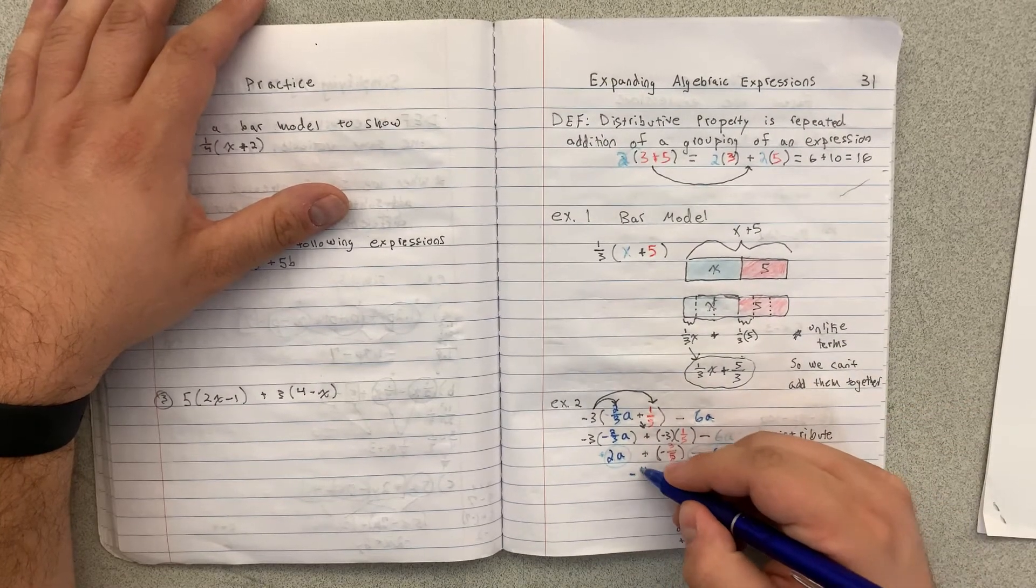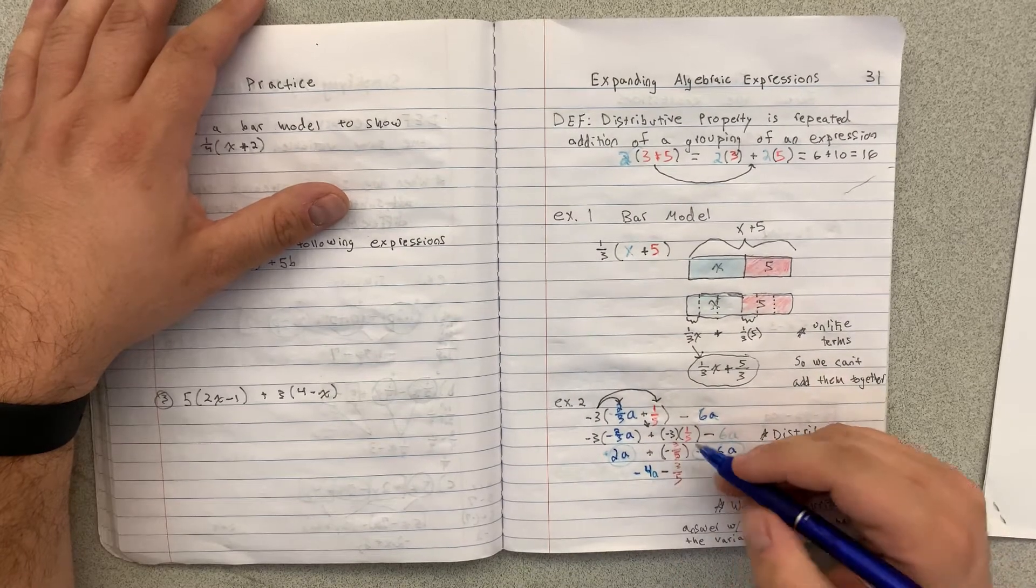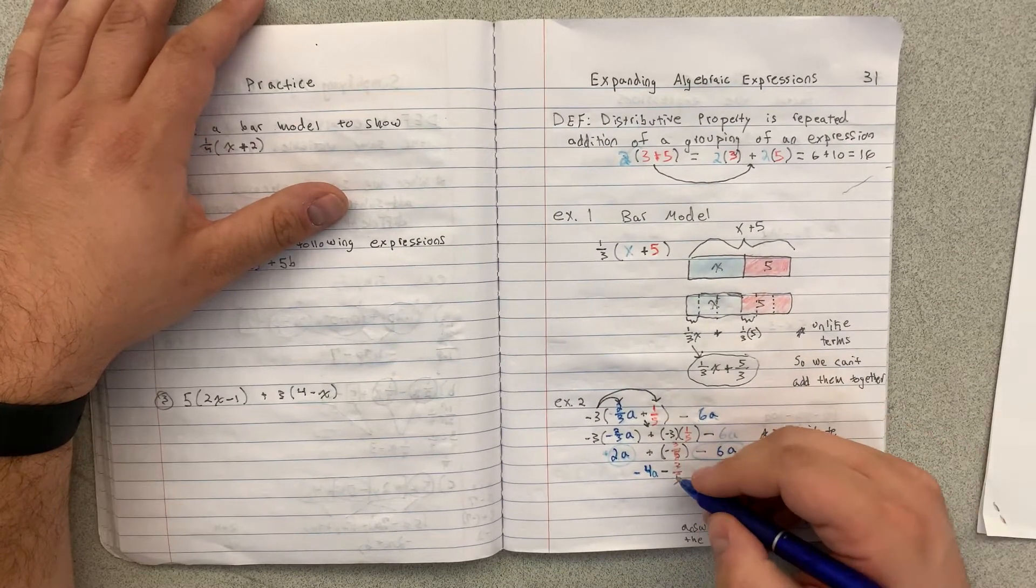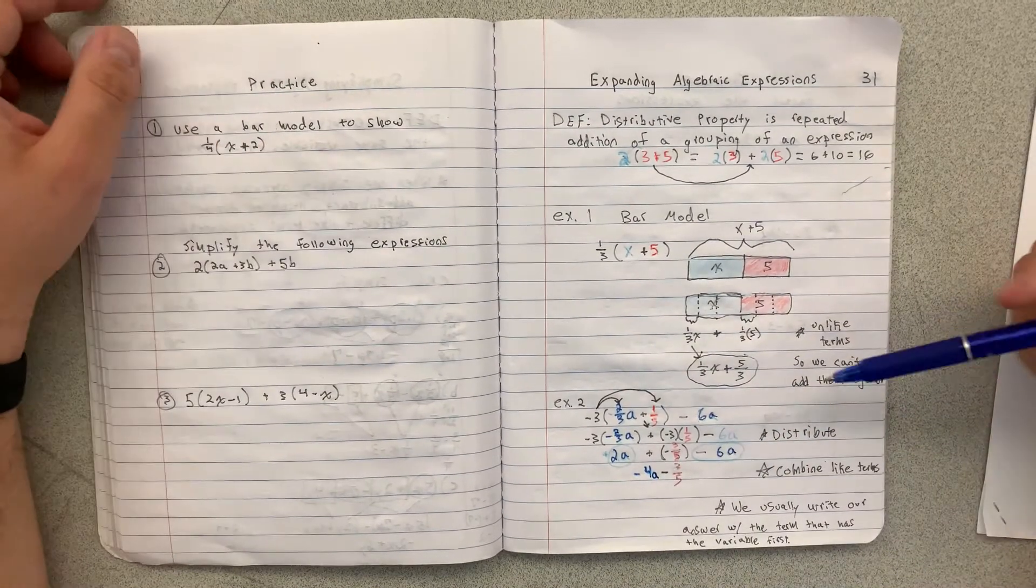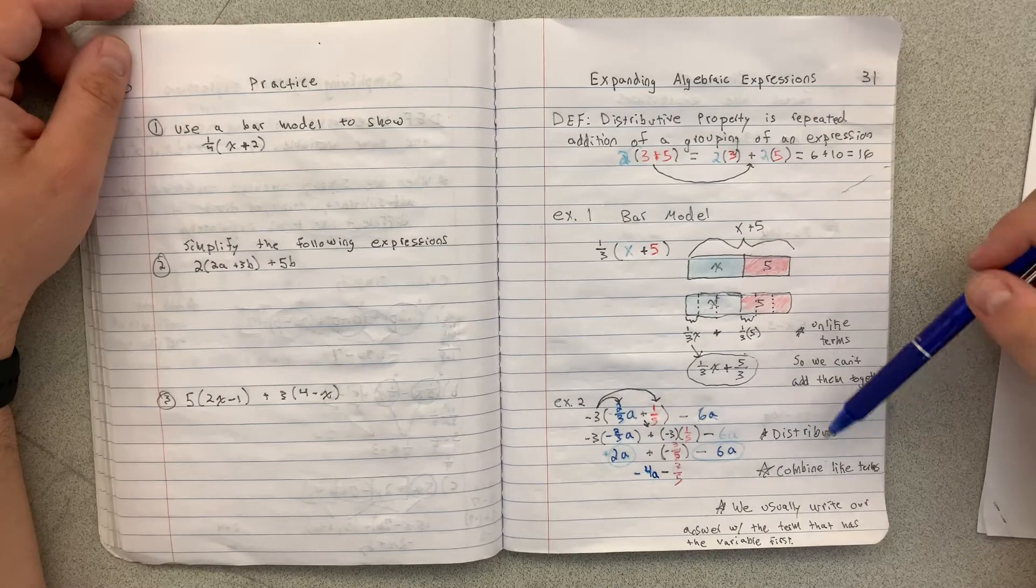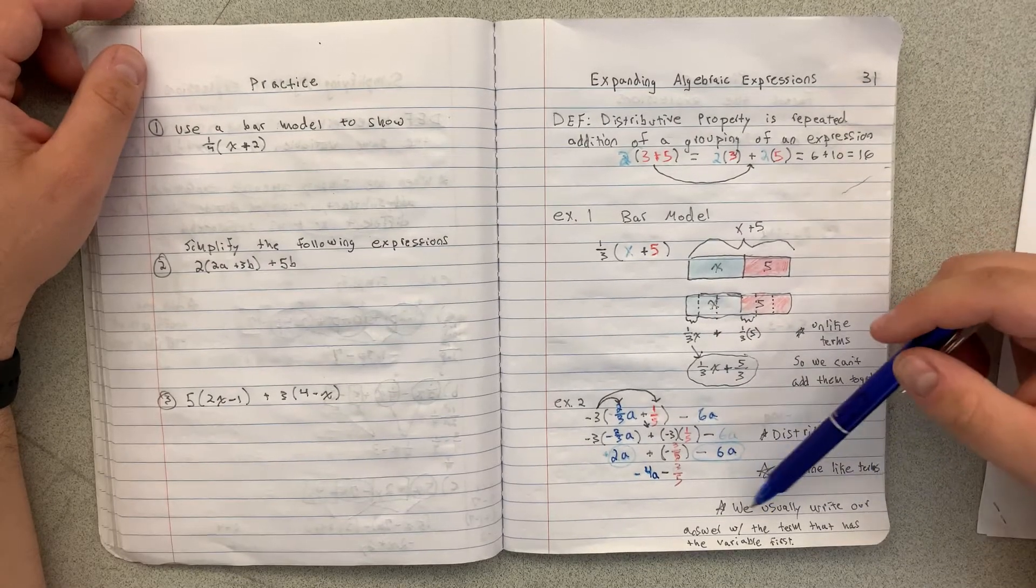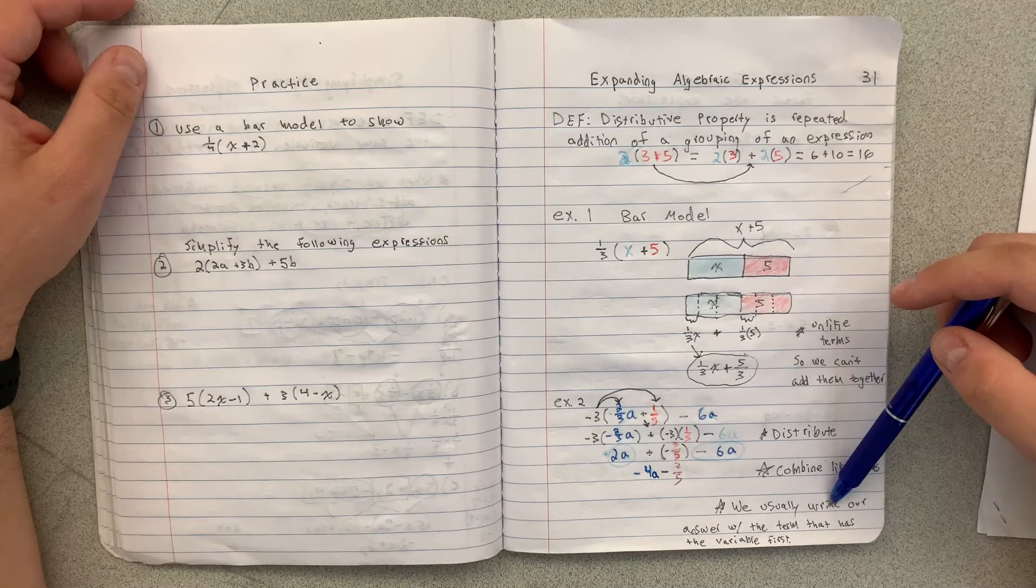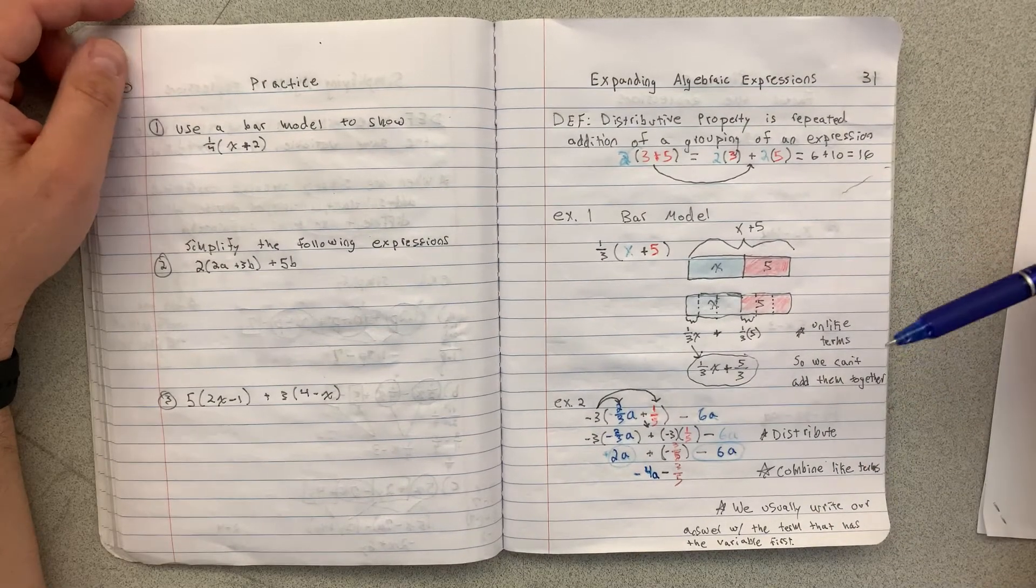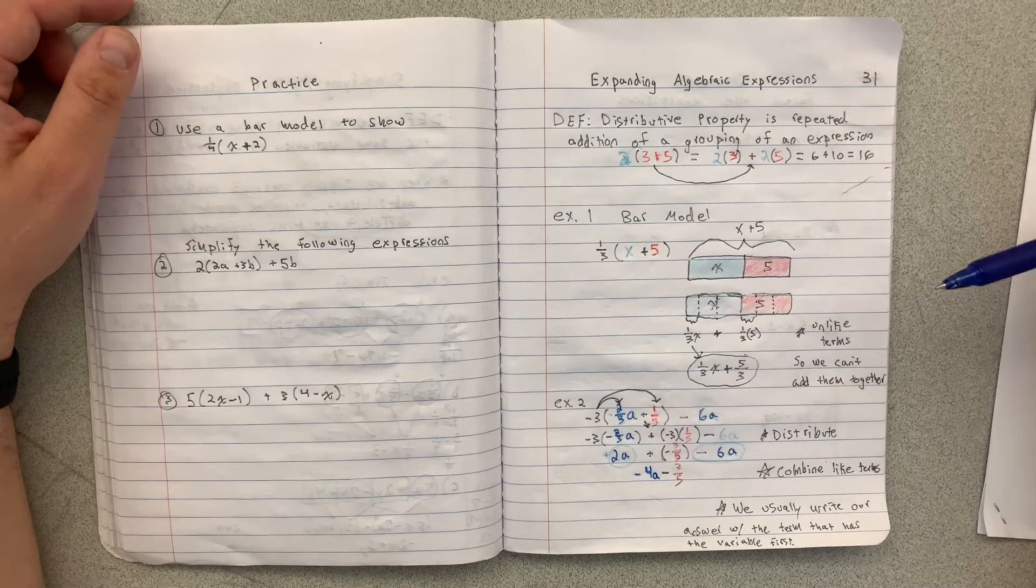And then negative 3 times 1 fifth is negative 3 fifths. And when we do this, we usually write our answer with the term that has the variable first. And if you have two variables, then it's kind of up to you, but I usually go in alphabetical order.